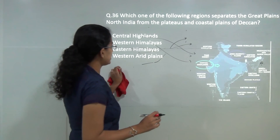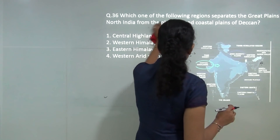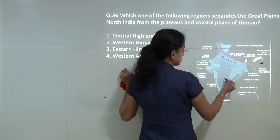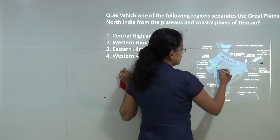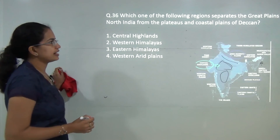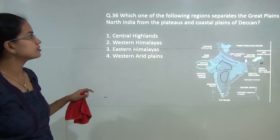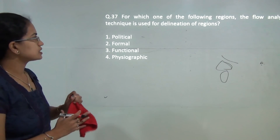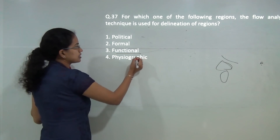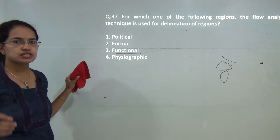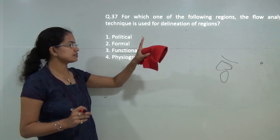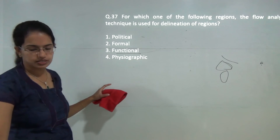Central highlands clearly exist between the Indo-Gangetic plains in the north and the Deccan plateau in the south. The correct answer is central highlands, which demarcate or separate the two regions. Next, flow analysis technique is used to delineate the functional regions — flow analysis is explained based on the functional region.